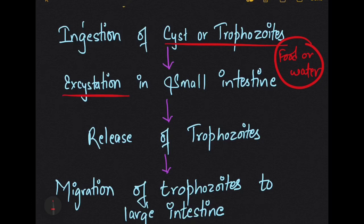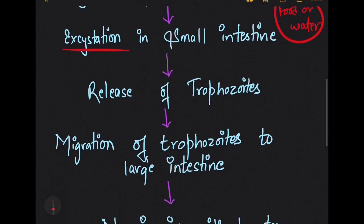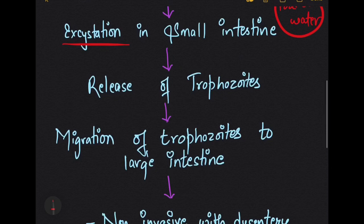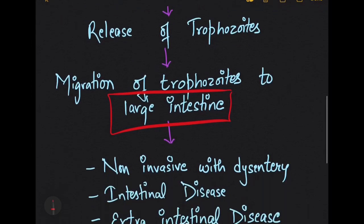Excystation is the process of release of trophozoites from the cyst form, usually occurring in the ileum portion. These trophozoites then migrate towards the large intestine, which is the primary site for multiplication.